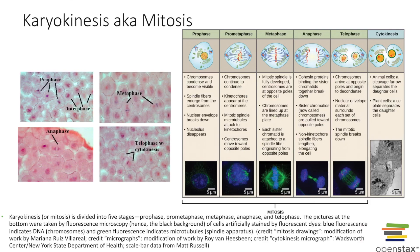The steps of mitosis — also called karyokinesis — are prophase, metaphase, anaphase, and telophase. There is also a step between prophase and metaphase called prometaphase. Telophase and cytokinesis tend to be lumped together, as they happen at similar times.